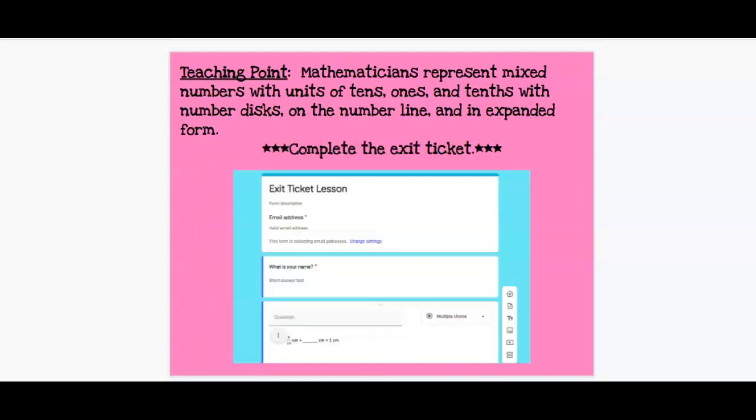and make certain to self-assess your work. Once you're done, I want you to make certain that you are completing the exit ticket. So go back into the instruction part of the lesson in Google Classroom, and I want you to click on the exit ticket and complete the exit ticket. Remember, please do not complete the exit ticket until you feel confident that you fully understood or you feel that you've understood enough to complete the exit ticket. All right. Have a good day.